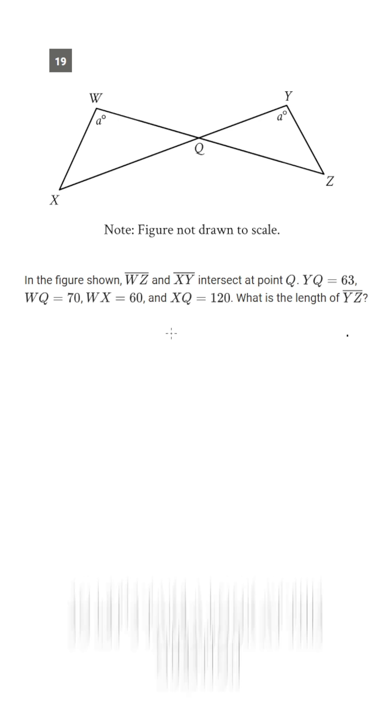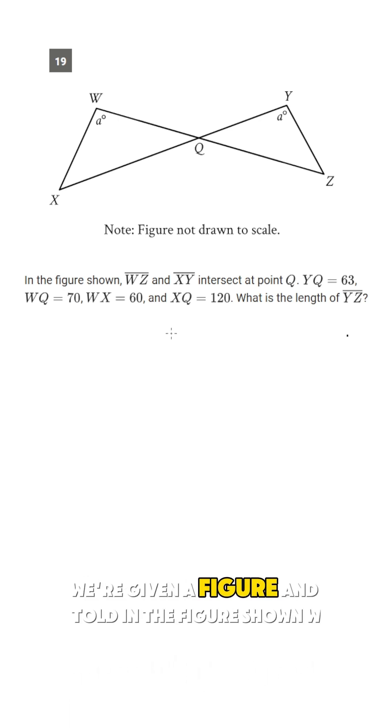So let's take a look at this question. We're given a figure and told in the figure shown WZ and XY intersect at point Q. YQ equals 63, WQ equals 70, WX equals 60, and XQ equals 120.